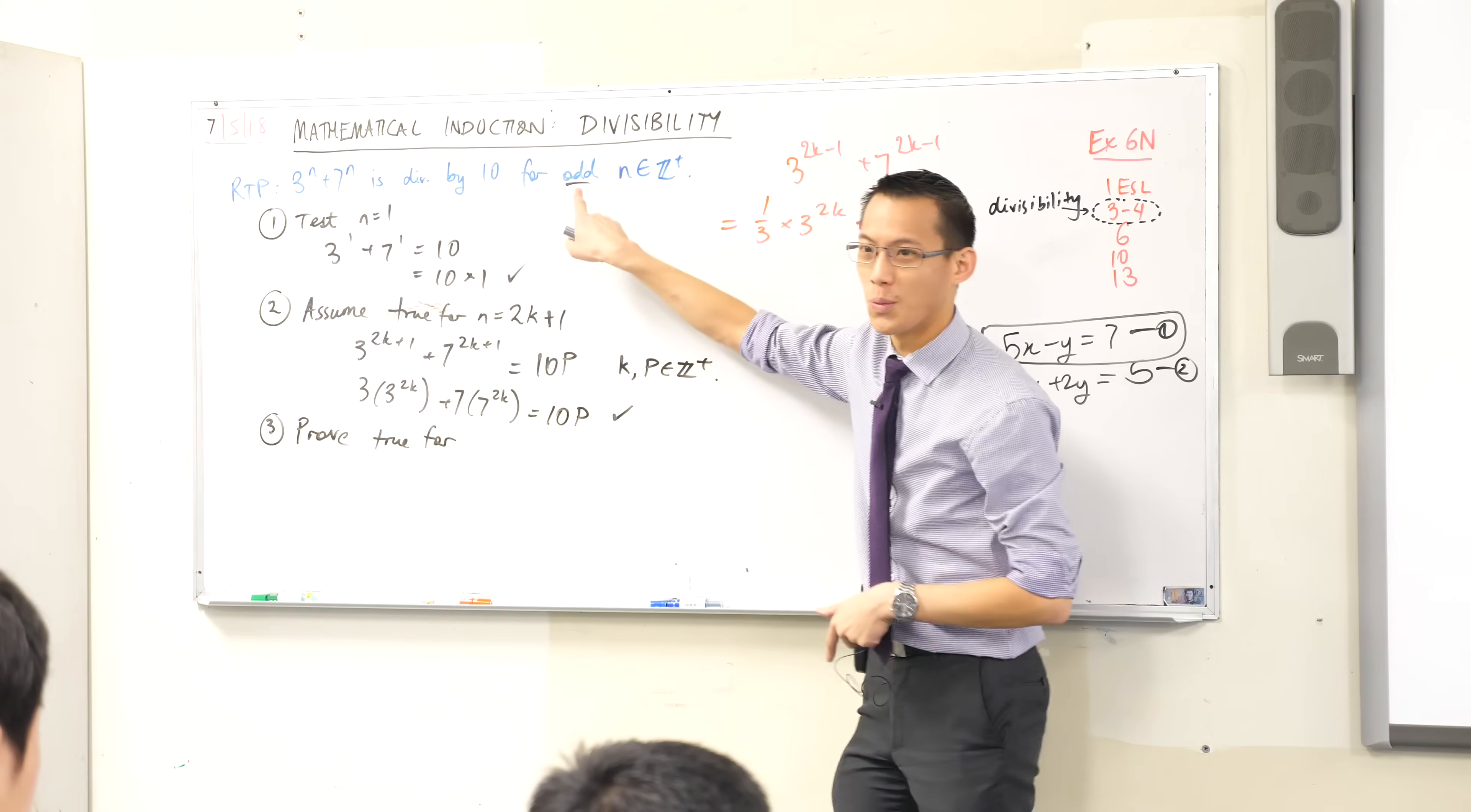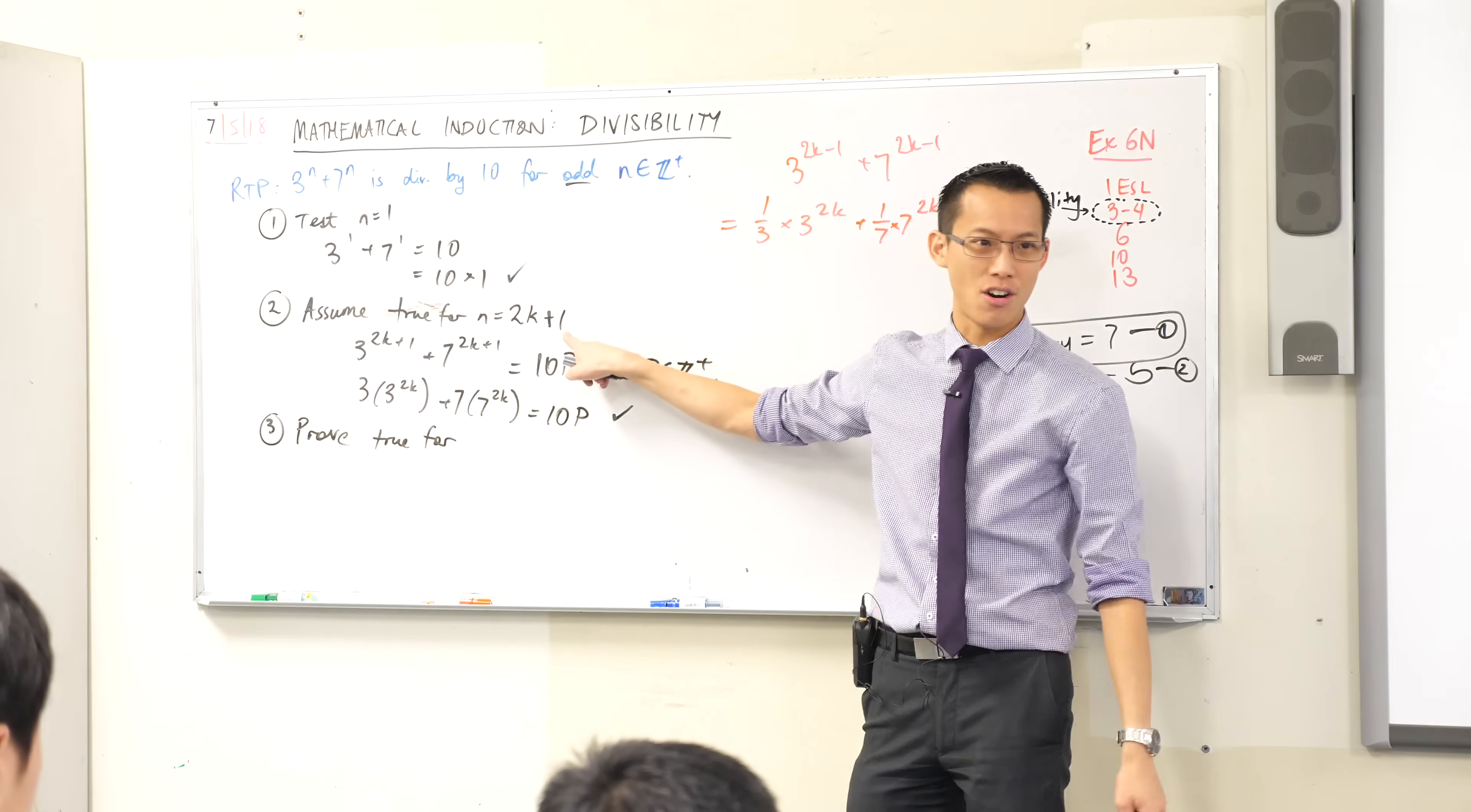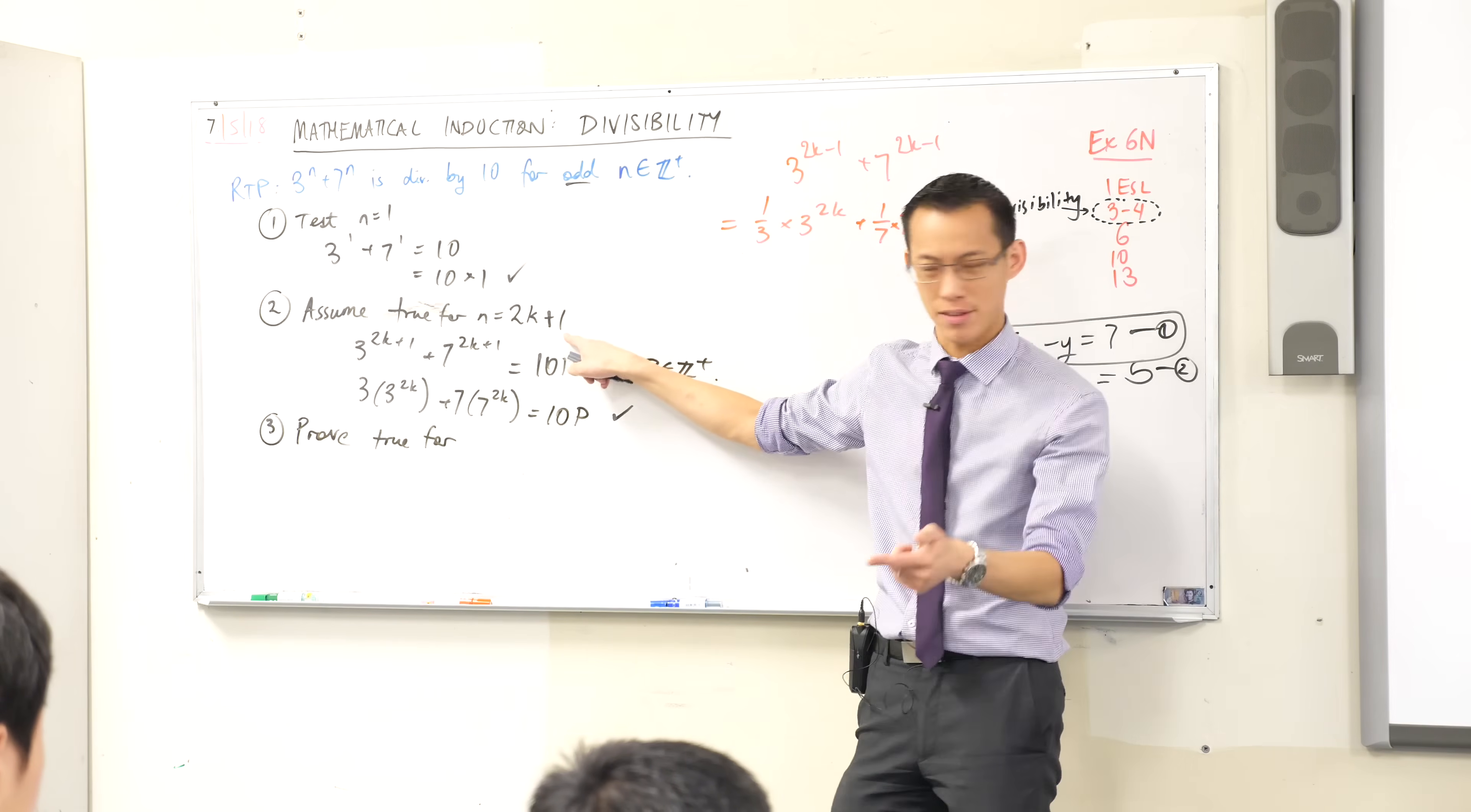2k plus 2 would give me an even number then an odd one. Does that make sense? What is the next odd number after this? 2k plus 3.